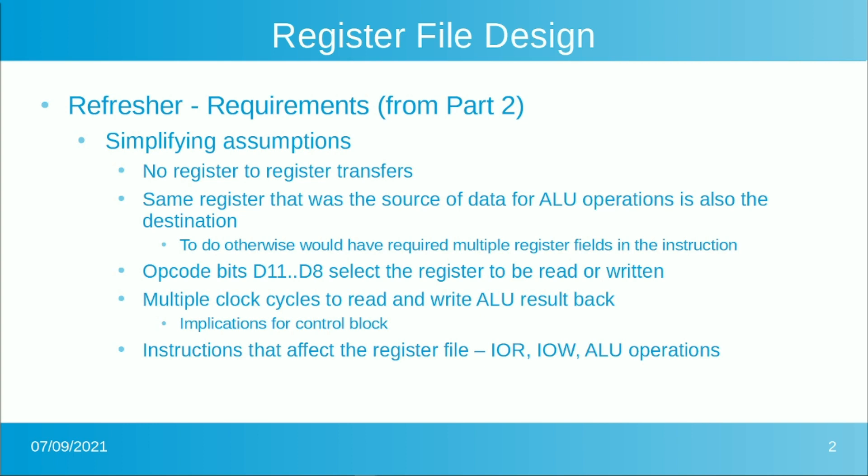In IO applications, you're typically going to want to read a status register from something like a UART, mask off the bits you don't want with an AND, and do a branch based on that mask — probably waiting for a character to come in on that UART. Putting the result in another register wouldn't really have any value, and we'll have plenty of registers by the time we're done.